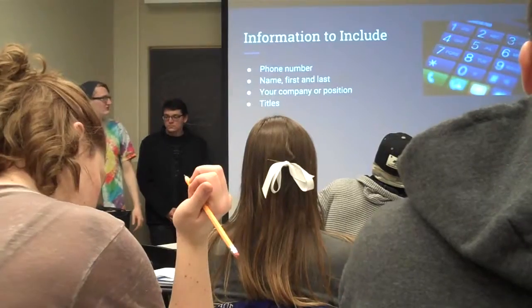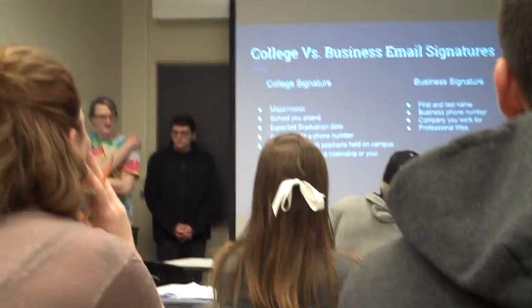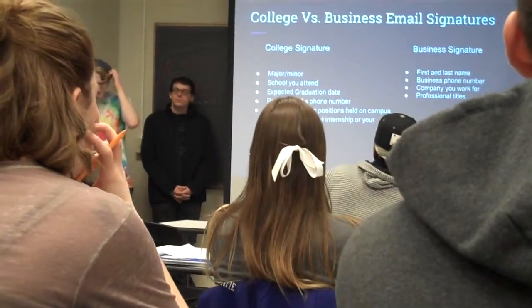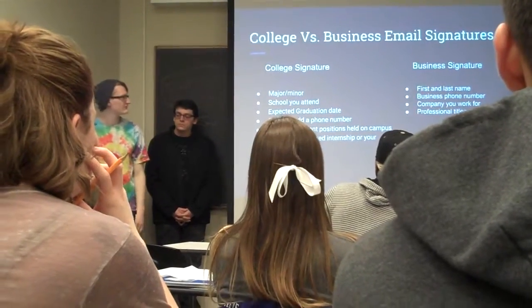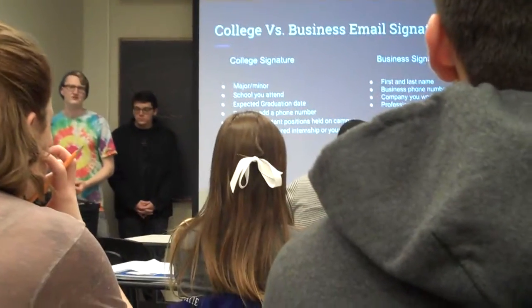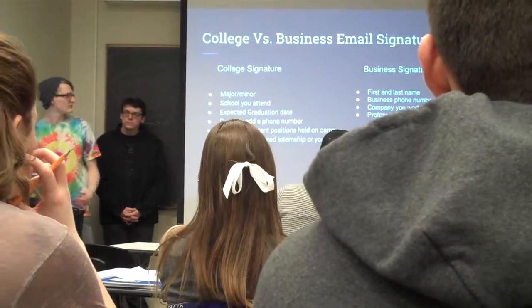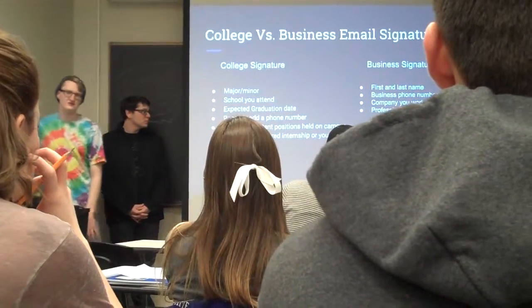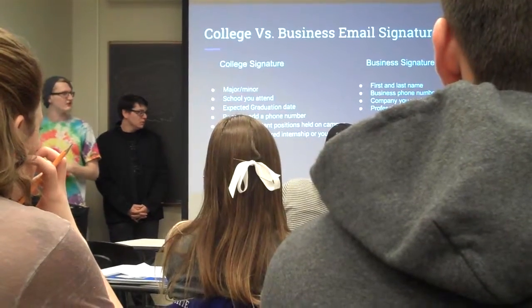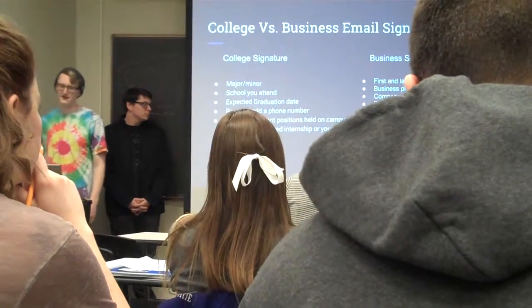Here's what you should include in your signature: short, simple, and sweet — your phone number, first and last name, your company position, and titles. College and business email signatures differ just a little bit. Your college signature is going to be a little longer and should include your major or minor, the school you're attending, when you expect to graduate, and optionally a phone number. You should also include important positions you hold on campus — like if you're the leader of a club, a president, or you work in a lab or do research. For your business signature, just your first and last name, business phone number, company you work for, and pertinent job titles.